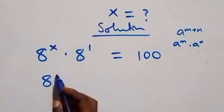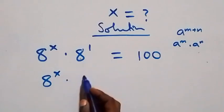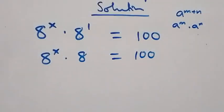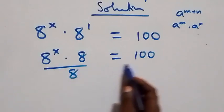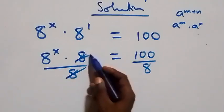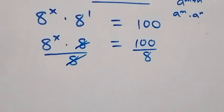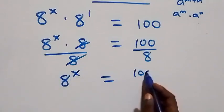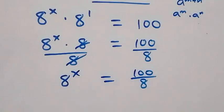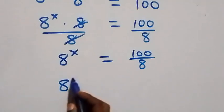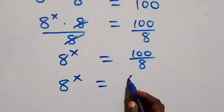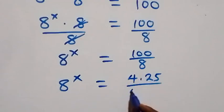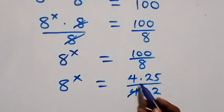This is the same thing as a raised to power x times a raised to power 1, which is 8, equals to 100 on this side. Next step, we divide both sides by 8 — divide over 8 also on this side. They cancel each other and we are left with a raised to power x, which equals to 100 over 8 on this side. We can rewrite this as a raised to power x equals 4 times 25 over 4 times 2, and the 4's cancel each other.